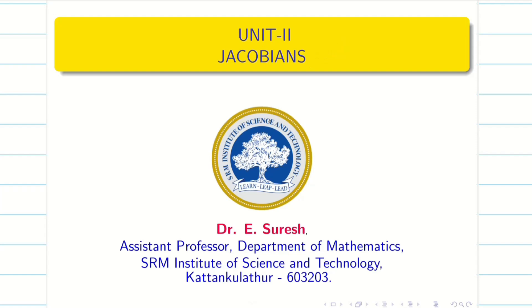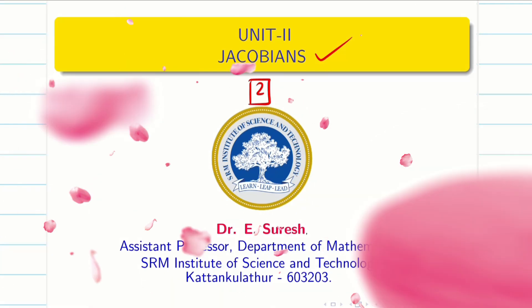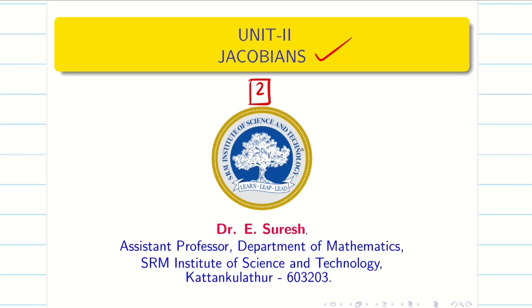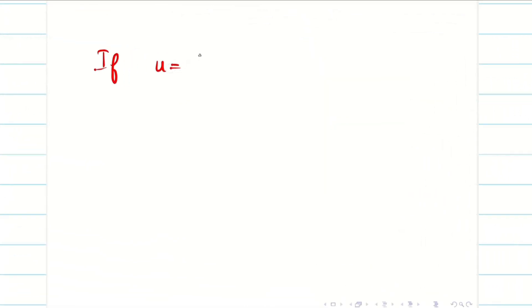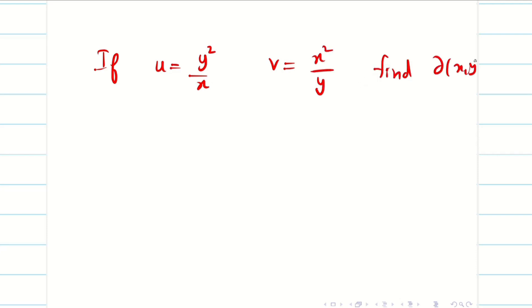Welcome to the problem solving session on Jacobians Part 2. In this session we are going to solve a few more problems on Jacobians. The first problem: if u = y²/x and v = x²/y, then find ∂(x,y)/∂(u,v).